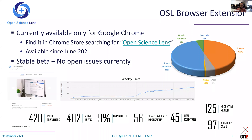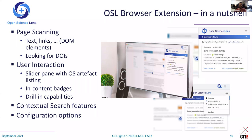Ever since release there has been a steady increase in the user base, with a big increase around August. We are right now at about 420 unique downloads and 402 active users. Nine percent of the people who downloaded the plugin uninstalled it, but we aim to get them back. The user base is spread across around 45 countries, with Mexico currently the most active, closely followed by Spain.